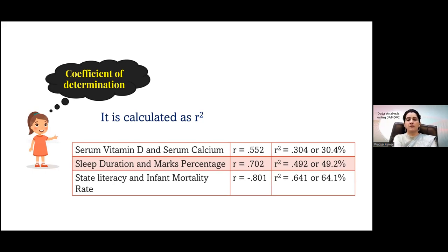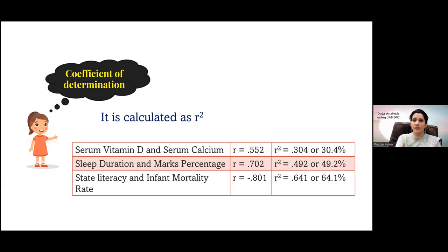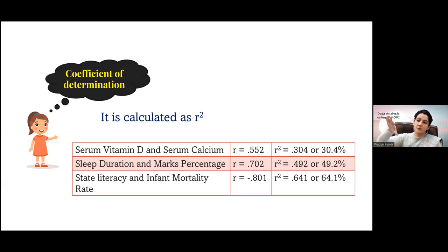Before regression, we go for correlation because we check whether there is an association and then see the strength of variation in the dependent variable. Regarding whether correlation corresponds to the slope of a line: no, the slope is the regression line of best fit. For correlation, you see that if the line is straight, when one variable is increasing, the other variable is also increasing.